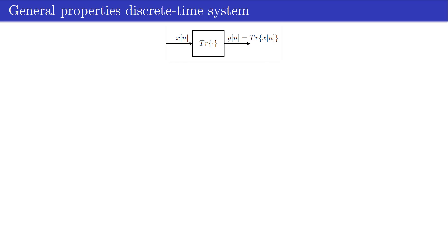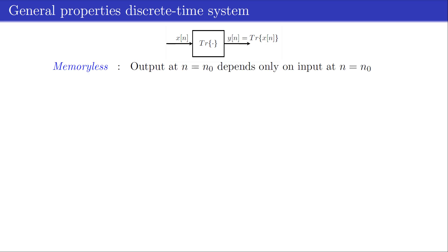Discrete time systems may be classified in terms of the properties that they possess. Some of these general properties are: a system is memoryless if the output at any time n=n0 depends only on the input at time n=n0.